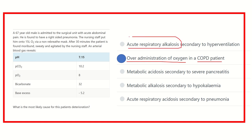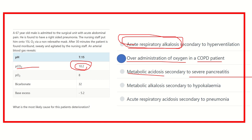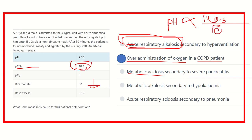Respiratory alkalosis is not possible in this case because carbon dioxide is elevated, and we know carbon dioxide is directly related to an acidic condition. For metabolic acidosis due to severe pancreatitis, if metabolic acidosis developed, bicarbonate would decrease — but here the bicarbonate increases. Always keep in mind the equation: pH is proportional to bicarbonate divided by partial pressure of carbon dioxide.